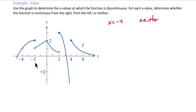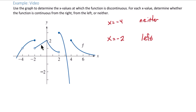Our next discontinuity occurs at negative 2. It looks like it is continuous from the left. As you approach negative 2 from the left, the value of the limit is 2, and f of negative 2 is also 2. So we're continuous from the left, but not from the right — the right limit is not the same as f of negative 2.